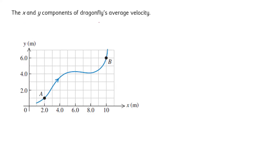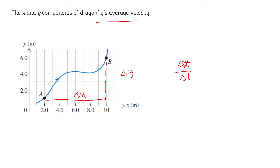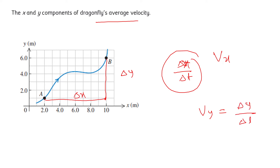Here, we have to find the x and y component of the dragonfly's average velocity. For that, we must know the total displacement along the x direction and the displacement along the y direction. Let's suppose delta x is the total displacement along the x direction. We will divide it by the time delta t, and this gives us Vx, the x component of the dragonfly's average velocity. Similarly, Vy equals delta y divided by delta t.